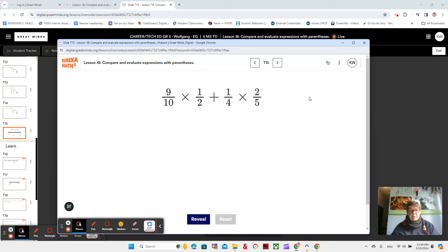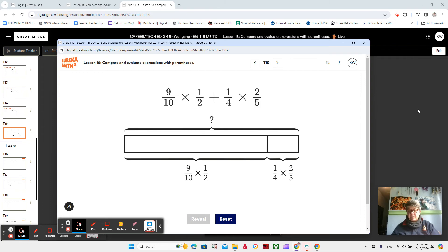Let's look at a tape diagram. These tape diagrams can be helpful, right? Does that change anything for you there? What information do you see on the tape diagram? We have two parts. One is 9/10 times 1/2 and the other part is 1/4 times 2/5. And then the sum of the parts is the value of the unknown.